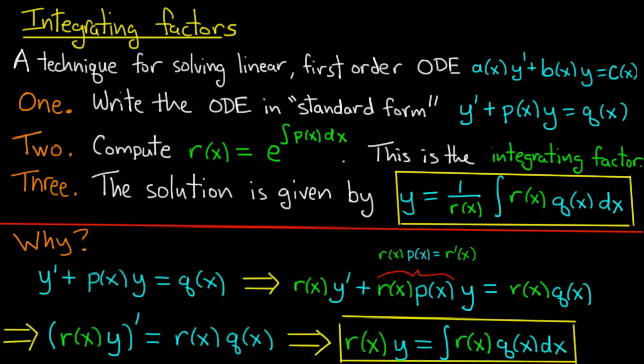Let me explain where this formula comes from. We start with y' plus p(x)y equals q(x). We compute the integrating factor as I described in step 2. If we multiply both sides by the integrating factor, we have r(x)y' plus r(x)p(x)y equals r(x)q(x).